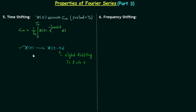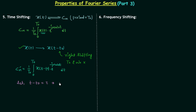Because of this shift, there is only a change in the signal x(t), and we will have a new Fourier coefficient which we will call cn'. So cn' is equal to 1 over t0, integration from 0 to t0 of x(t - t0) multiplied by e^(-jnω₀t) dt. Now we substitute τ = t - t0, which implies t = τ + t0.